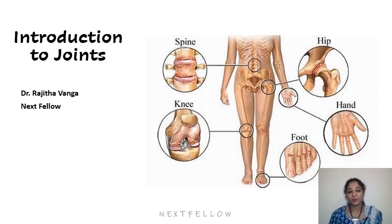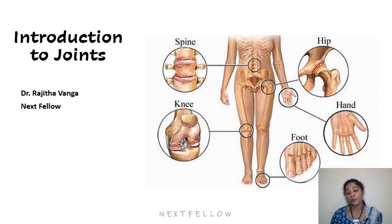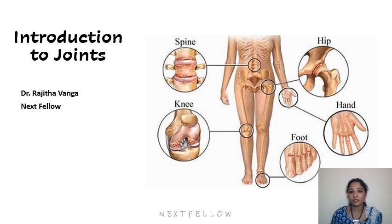Today's topic is an introduction to joints. A joint is the union between bones, where one, two, or more than two bones participate. Joints can be classified structurally based on the tissue present within the joint cavity: fibrous tissue, cartilaginous tissue, or synovial fluid — giving fibrous joints, cartilaginous joints, and synovial joints.